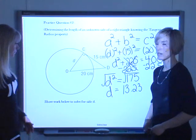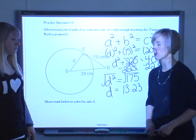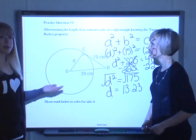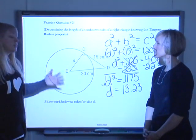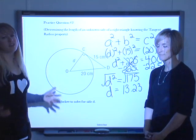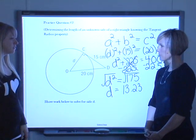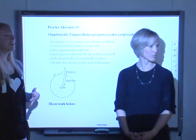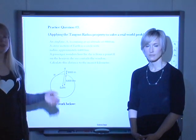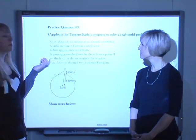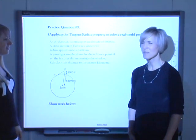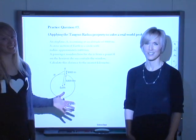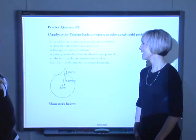Perfect. So, we've used the tangent radius property to solve for an unknown leg in a triangle. As well as Pythagorean, because we have a right triangle. And with the right triangle, like I said, your rule of thumb, start looking for Pythagorean. Perfect. All right. So, for the last question, practice question three, we're going to actually apply the tangent radius property to solve a real-world problem. What? Math applies to the real world? I know. It's pretty crazy, right? We better do this one.